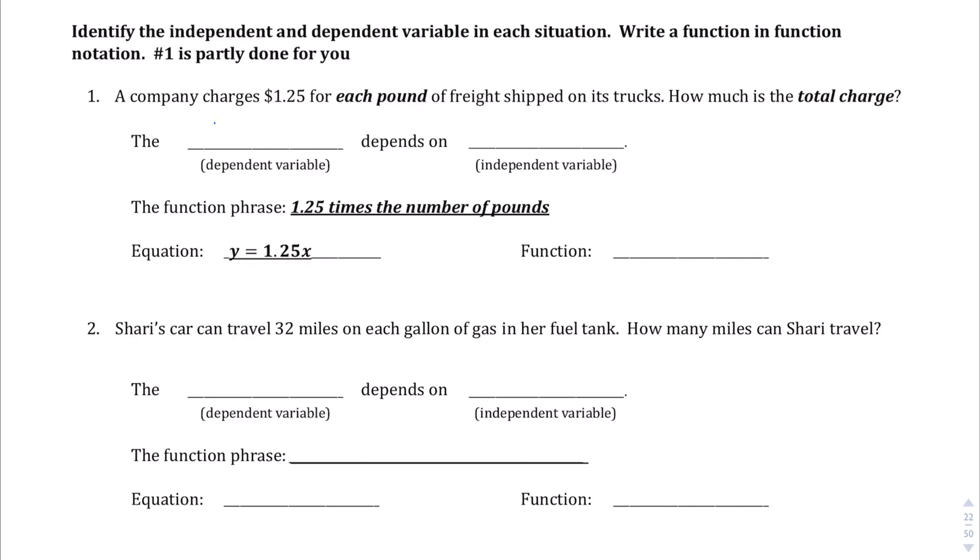Right, so if it's heavier, presumably you're going to pay more. If it's lighter, you're going to pay less. So the function phrase "1.25 times the number of pounds" is the function phrase there. You write it as an equation like this: y equals 1.25x, where x is the amount of weight.